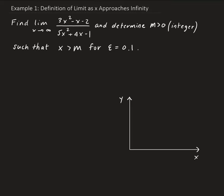In this example, I want to illustrate the definition of limit as x approaches infinity. We want to find the limit of the function we're given and determine the integer value M that's strictly bigger than 0, such that x is strictly bigger than M for a given epsilon of 0.1. So first, let's find the limit of 3x squared minus x minus 2, all divided by 5x squared plus 4x minus 1, as x approaches infinity.